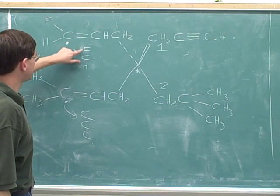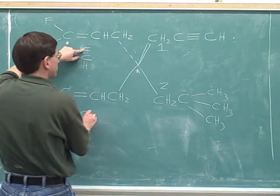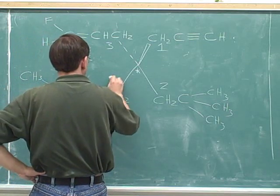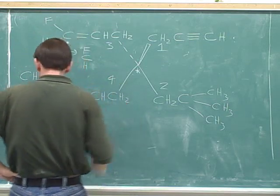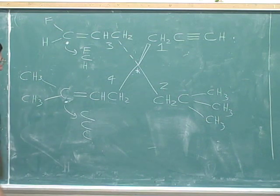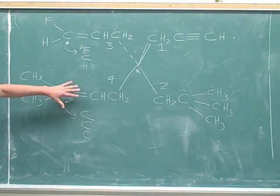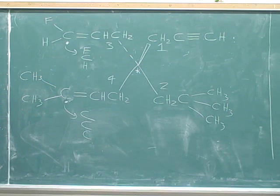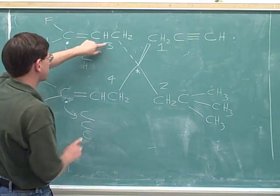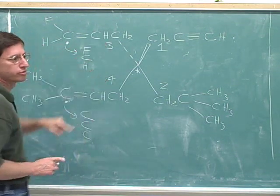The first point of difference is that this fluorine beats this carbon. So up here we have the number three priority, and on the bottom left we get the number four priority. When comparing these two groups, the first point of difference here is that this fluorine beat this carbon — that's why this group got a higher priority than the other.